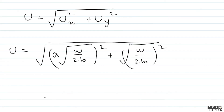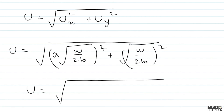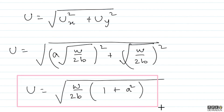So the final answer — the velocity at the origin — is u = √[w(1 + a²)/(2b)]. This is what was asked in the question, and we have found it. I hope, students, that this solution was clearly understood. In case you still have any doubt, feel free to contact me. I'll be very happy to help you. Take care, bye bye.